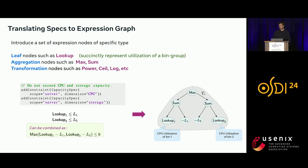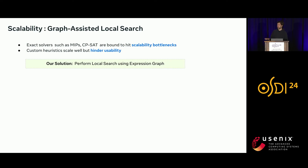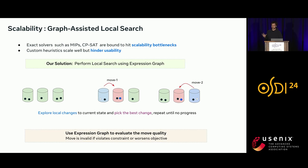This expression graph defines the abstraction that our solvers operate on. Typical solvers for the assignment problem fall into two categories: exact solvers such as MIPs, which don't scale well, and custom-built heuristics, which tend to be domain-specific and not easily reusable. Our solution is to implement a generic local search algorithm that works with this expression graph, making it domain-agnostic and easily reusable. This local search starts from a given solution, explores a bunch of local changes, evaluates solution quality for each change, picks the best, and updates the solution — repeating until no further progress can be made.